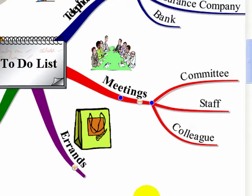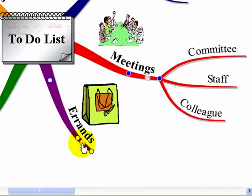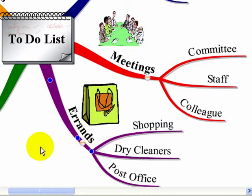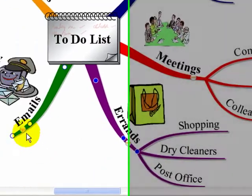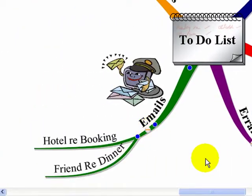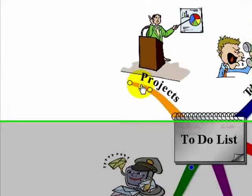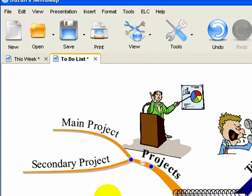I can show you how to do that in another video. On errands, you might list the different errands you've got to do during the day. For emails, the specific emails you have to write during the day, and maybe some specific activities that you want to do for each of your main projects. Simply add them onto the branches.